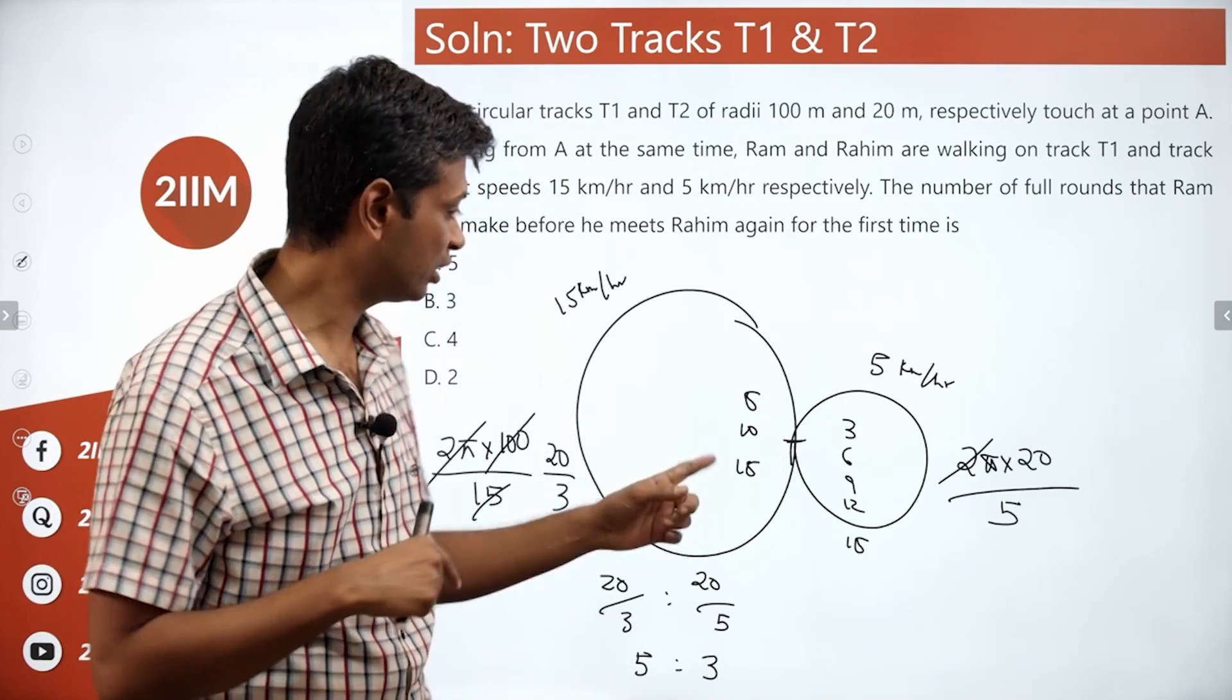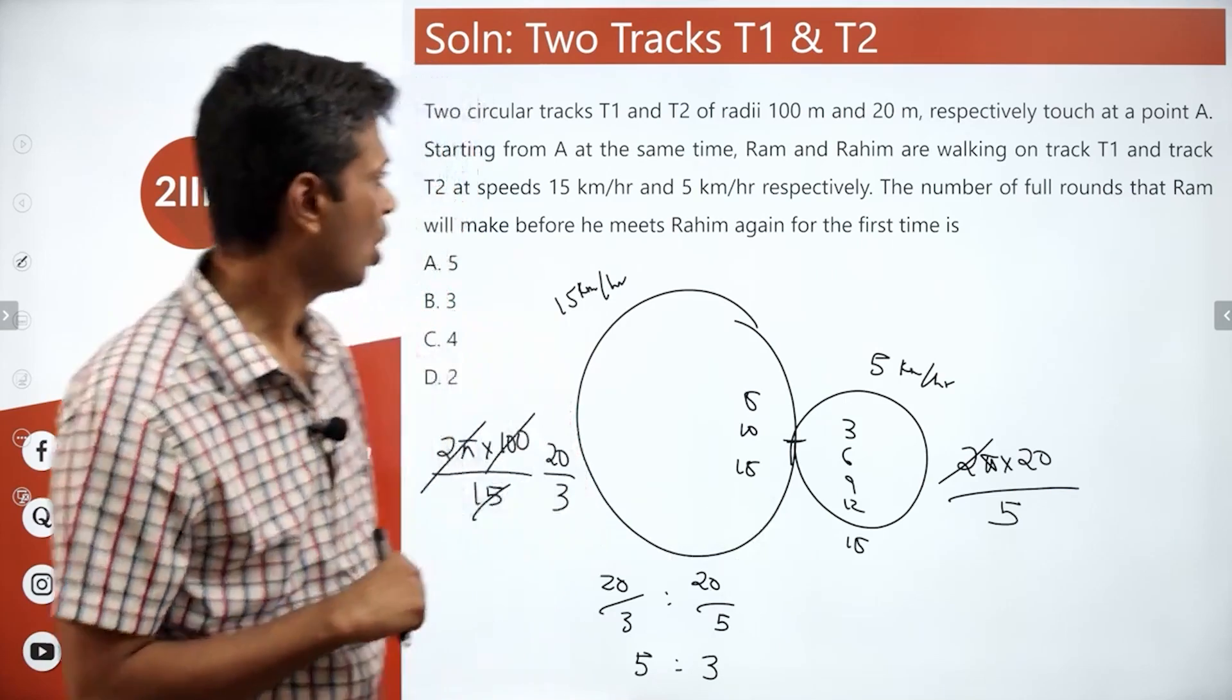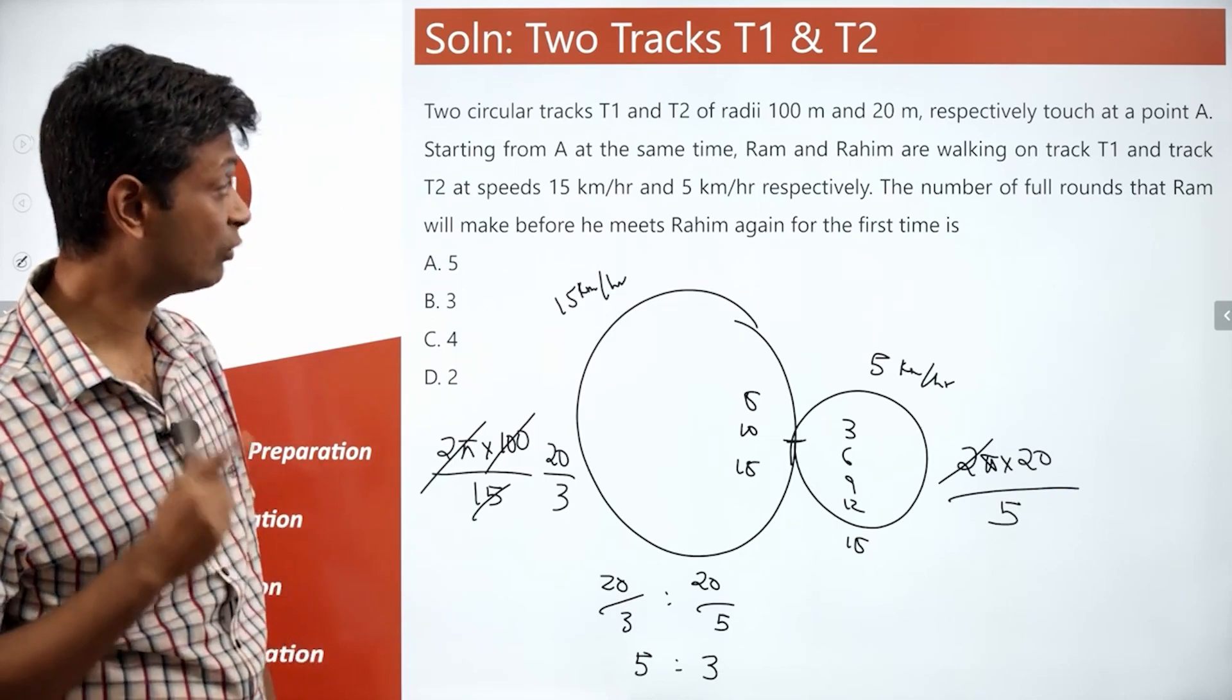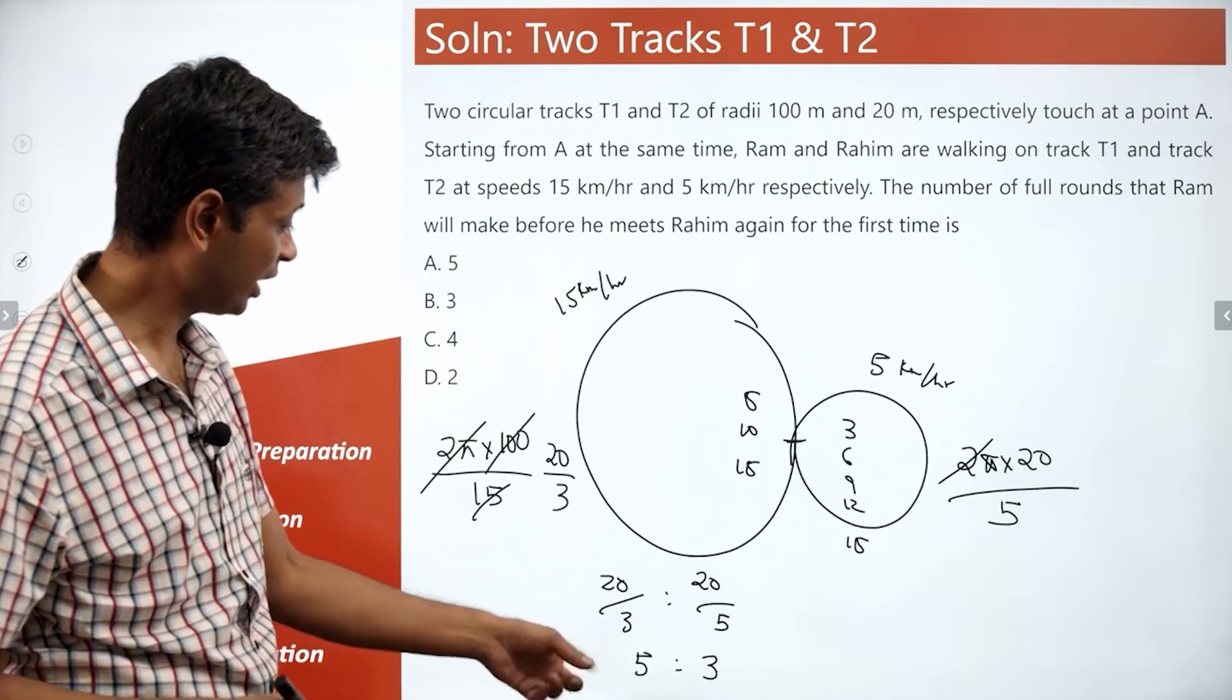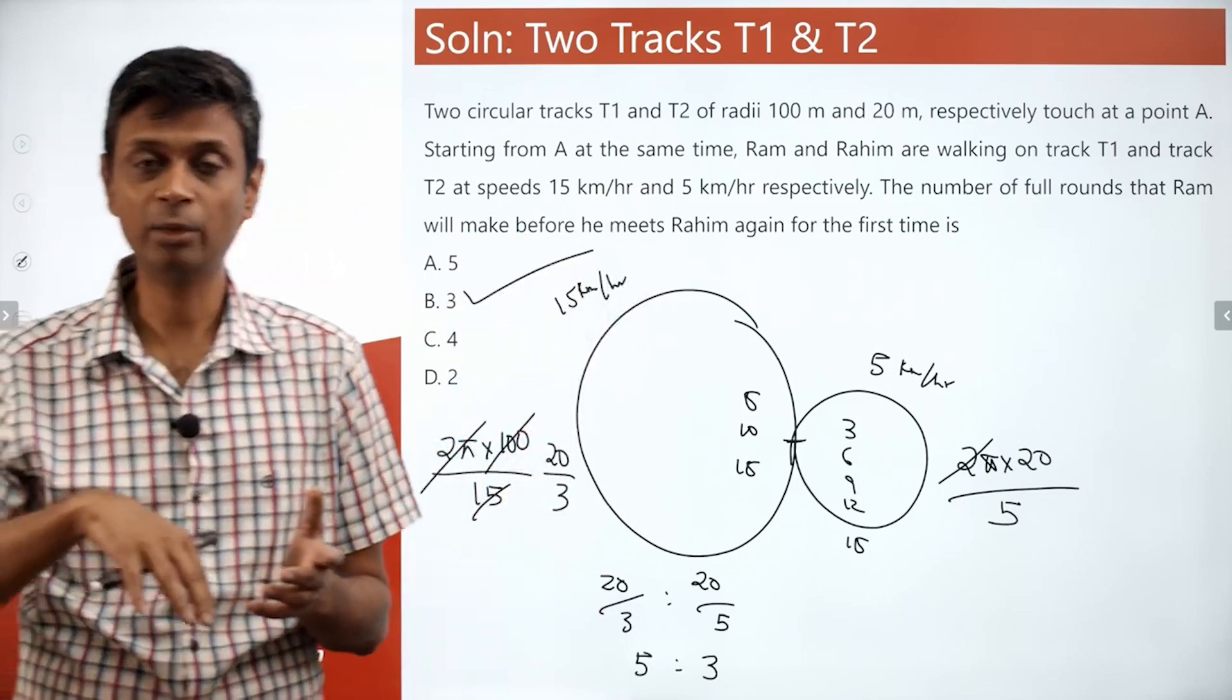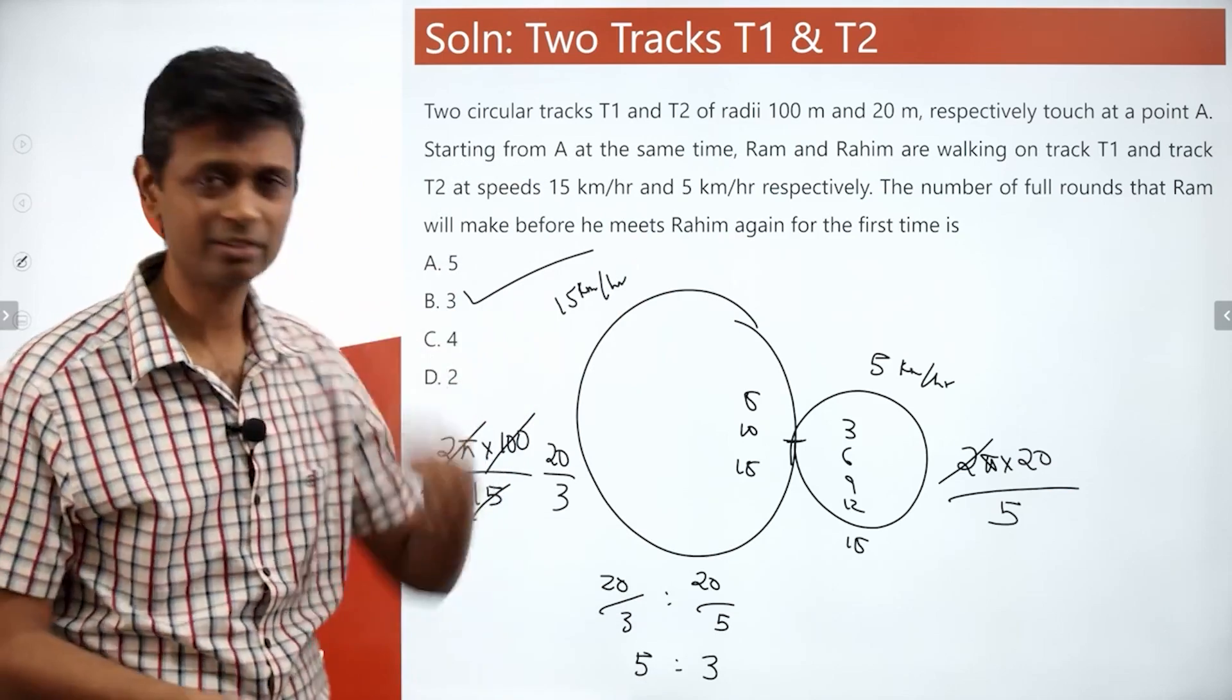That time, Ram would have done 3 rounds. Raheem would have done 5 rounds. And that's when they'll meet at the starting point again. Or the number of full rounds that Ram will make before he meets Raheem again for the first time. Ram takes longer time. He would have done fewer rounds, 3 rounds. That time, Raheem would have done 5 rounds. We just need to find the ratio of their speed. Everything else doesn't matter.